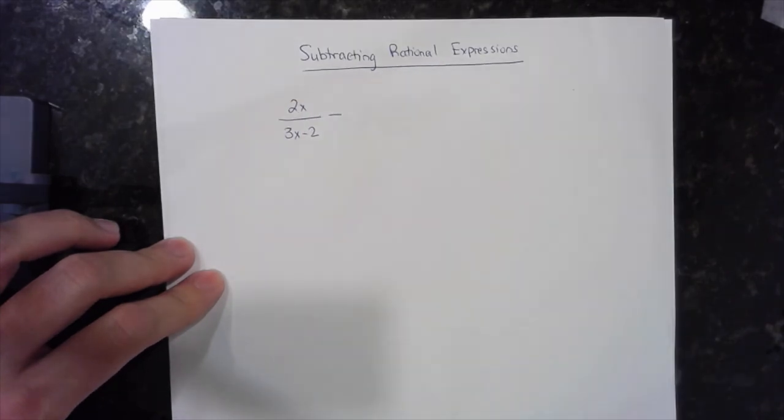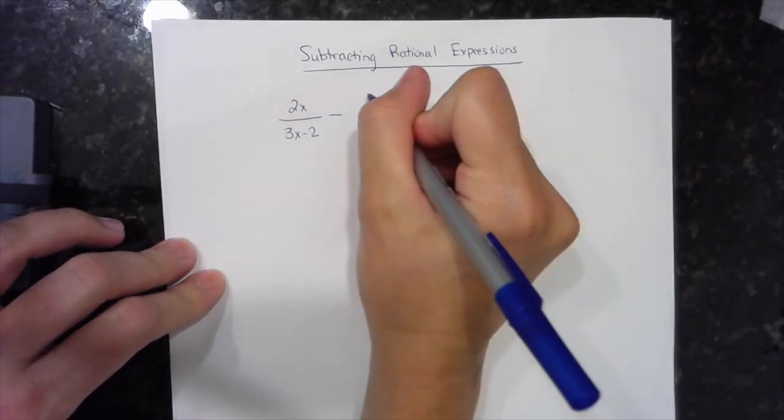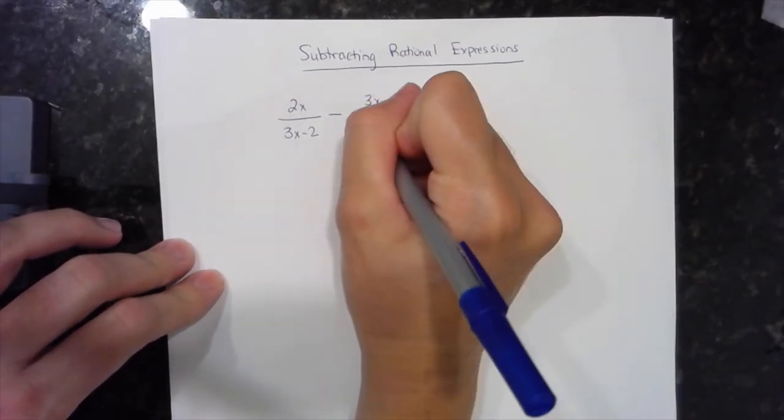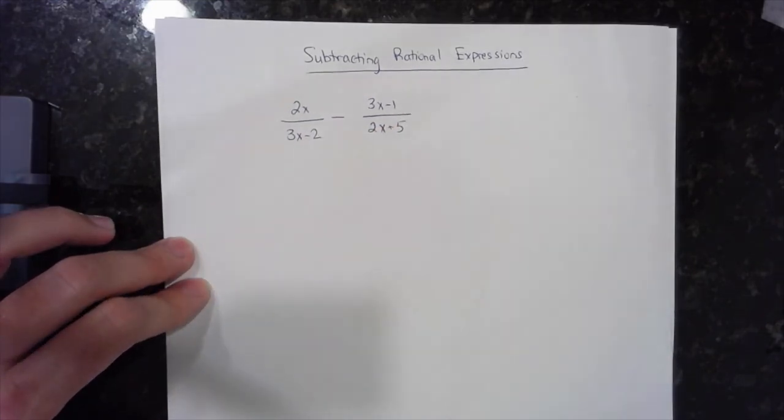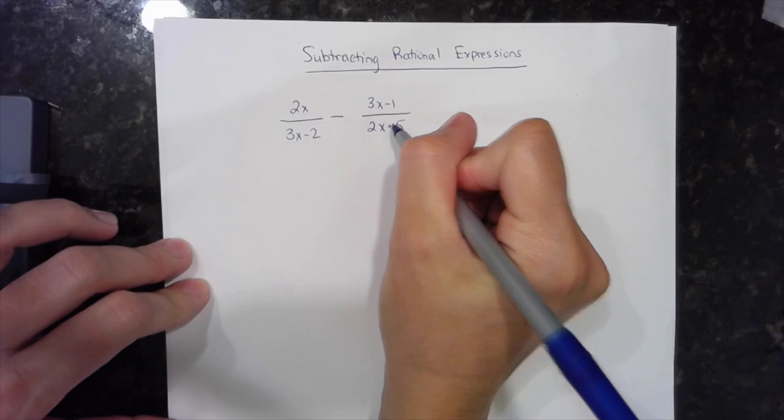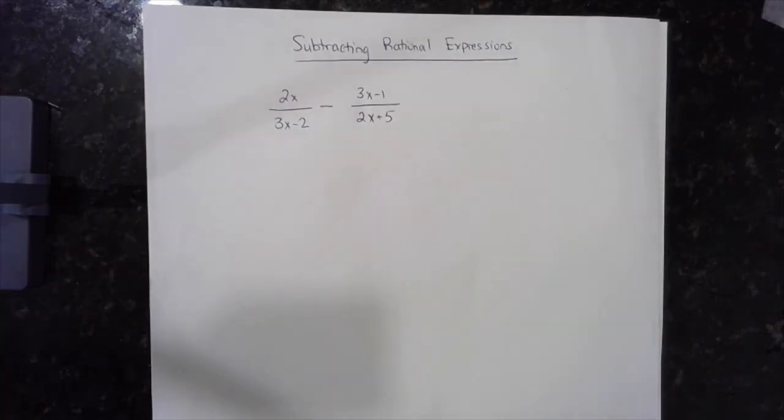And what I want to do is subtract two separate rational expressions. So let's say I have this as my second rational expression. Another fraction with an expression of x on the top and on the bottom.